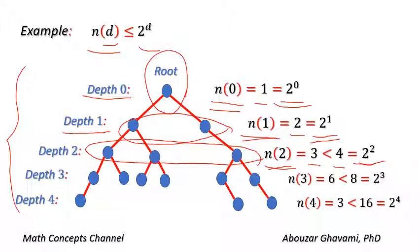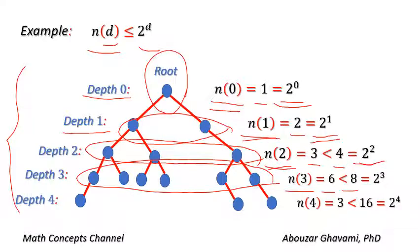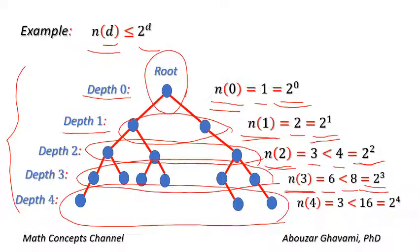At depth three, we have six nodes. So N of three equals six, and six is less than eight, and eight equals two to the power of three. Therefore N of three is less than two to the power of three. At depth four, we have only three nodes, and three is less than sixteen, which equals two to the power of four. Thus N of four is less than two to the power of four. We see that in this example, for all depths D, N of D is less than or equal to two to the power of D.